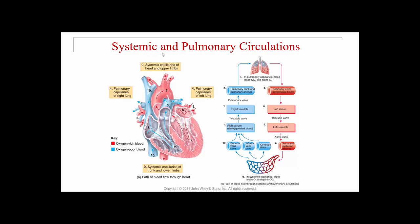Starting with the right atrium, which has deoxygenated blood: it sends blood through the tricuspid valve into the right ventricle. The right ventricle contracts and pushes blood through the pulmonary valve into the pulmonary trunk and pulmonary arteries to the lungs, where it gives up carbon dioxide and picks up oxygen. The oxygenated blood returns through the pulmonary veins to the left atrium, then through the bicuspid or mitral valve into the left ventricle, which pumps through the aortic valve into the aorta and systemic circulation.